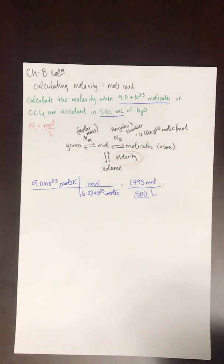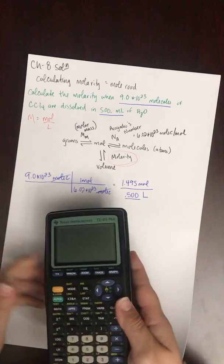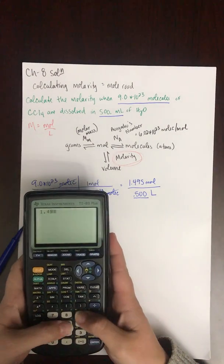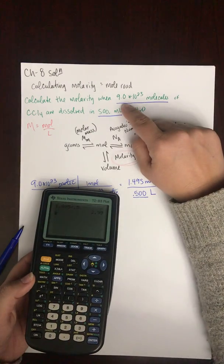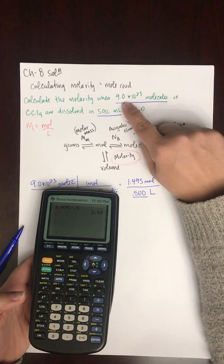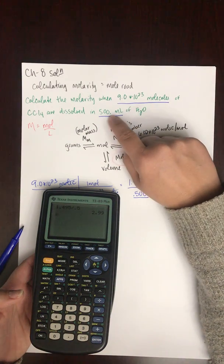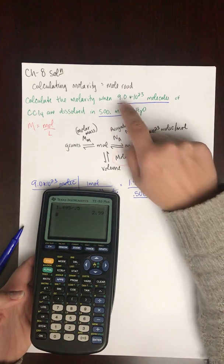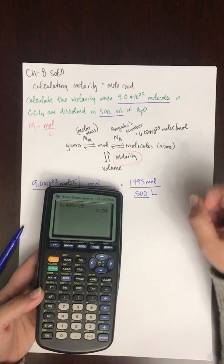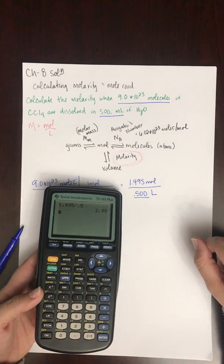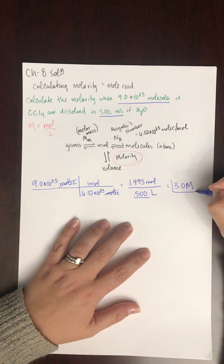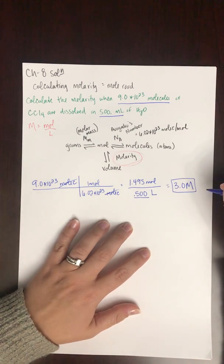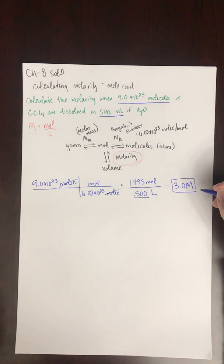Now dividing: 1.495 divided by 0.5 gives 2.99. Checking significant figures — 9.0 has two sig figs, and 500. has three sig figs — so the answer needs two significant figures. Rounding 2.99 to two sig figs gives 3.0. The molarity is 3.0 M — you say 'molar,' not 'molarity,' when using that unit. That's how we calculate molarity from a number of molecules.